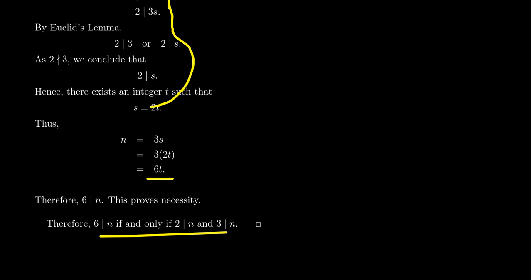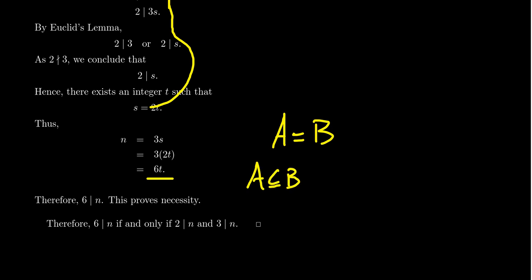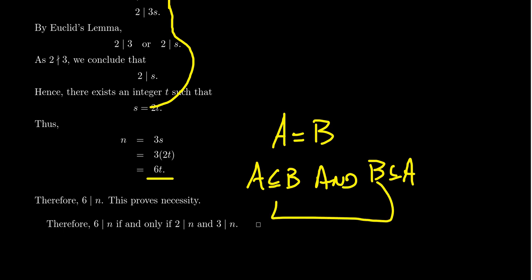Since we've proven both directions, we get the equivalence: six dividing N is equivalent to two and three dividing N, completing the if-and-only-if proof. To make a parallel: when proving two sets are equal, A equals B, we show A ⊆ B and B ⊆ A — two directions, very similar to logical equivalence. To show two statements are logically equivalent, we show implications in both directions: both sufficiency and necessity.